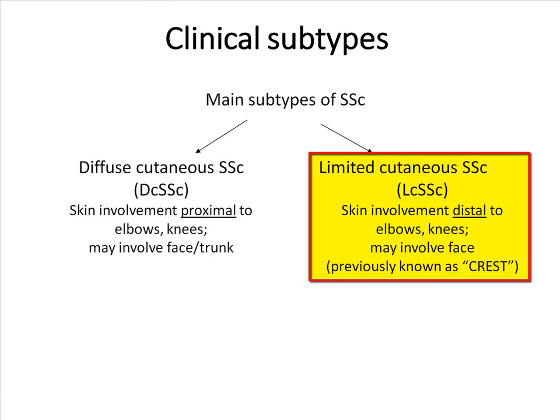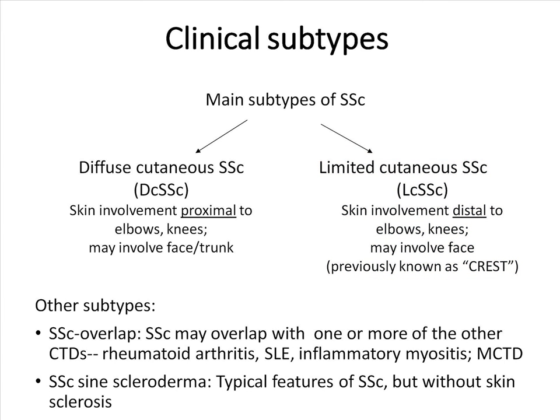Limited cutaneous systemic sclerosis used to be known as CREST syndrome, denoting calcinosis, Raynaud's phenomenon, esophageal dysmotility, sclerodactyly, and telangiectasia. Other subtypes include systemic sclerosis overlap syndromes, where SSc may overlap with one or more other CTDs. If features of all three are present, especially with the presence of anti-U1-RNP, it is known as mixed connective tissue disease. Another small group of patients, sine scleroderma, have typical features of systemic sclerosis but without skin involvement.